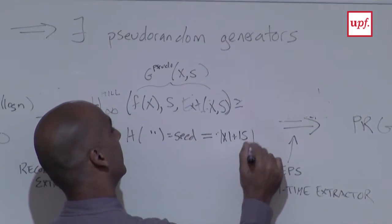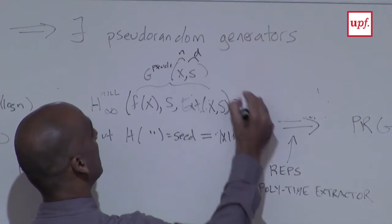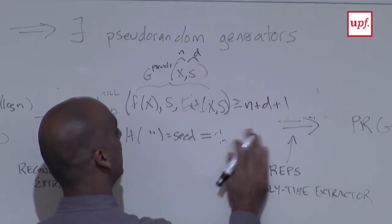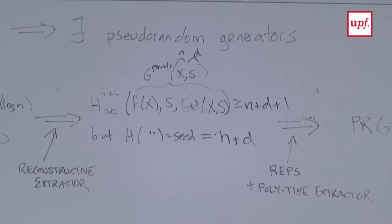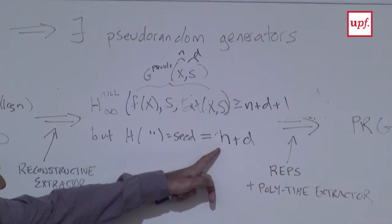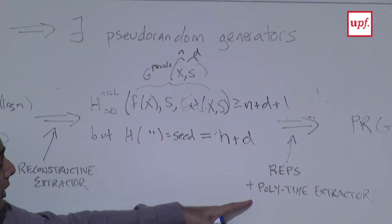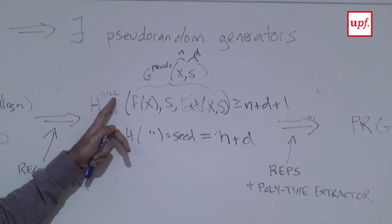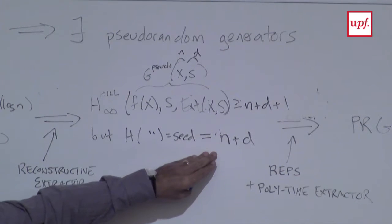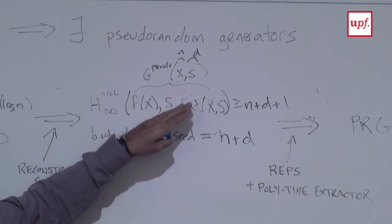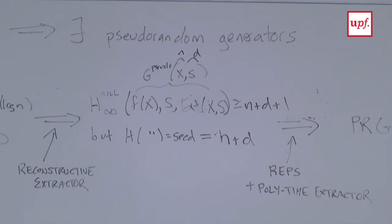This is n, this is d, this is n+d+1, and let me write n+d. By doing repetitions we can make this gap bigger, and then we can use any polynomial-time extractor to convert Hill pseudo-entropy into pseudo-randomness. We obtain an amount of pseudo-random bits larger than the seed length because the Hill pseudo-entropy is larger than the seed length. The repetitions are just to compensate for the entropy loss that happens when you do extraction.